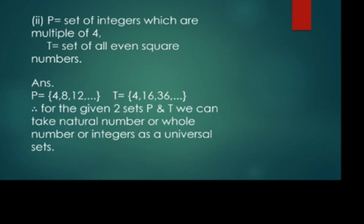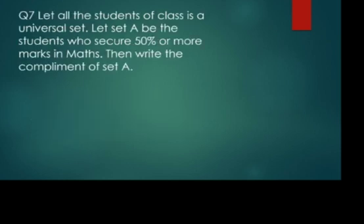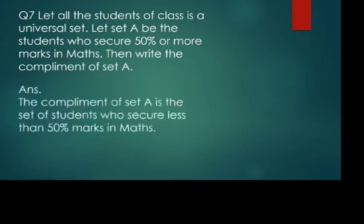Now students we will move to question number 7, the last question of this exercise. Let all the students of the class be a universal set. Let set A be the students who secure 50% or more marks in maths. Then write the complement of set A. In the previous lecture you learned what complement of a set means. The complement of set A is the set of students who secure less than 50% marks in maths.